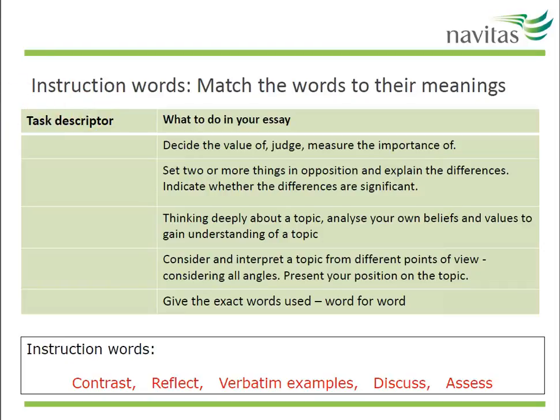Let's consider some task words. Press the pause button and think about which task descriptor belongs to which meaning. Let's check your answers. The first task descriptor is assess — making a judgement. The second is contrast — looking at differences. The third is reflect — thinking deeply and critically. The fourth is discuss. This is important as it signals you should be using an essay structure; it actually means present your position on the topic but consider different points of view. The last one is verbatim examples — give the exact words, often used in a reflective essay, in a counselling or incident report, for nursing or criminology.